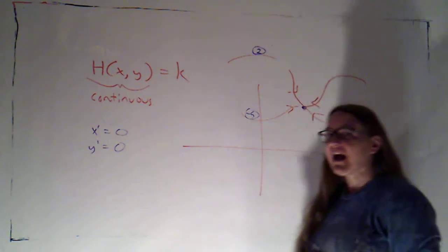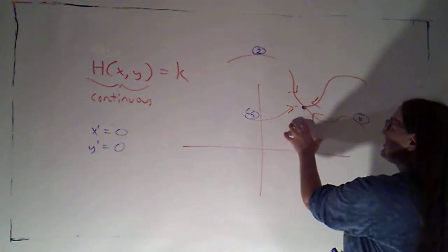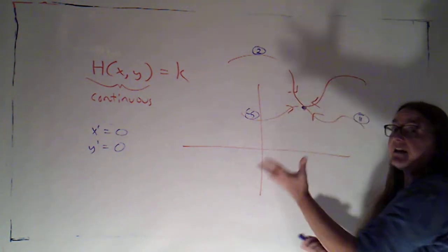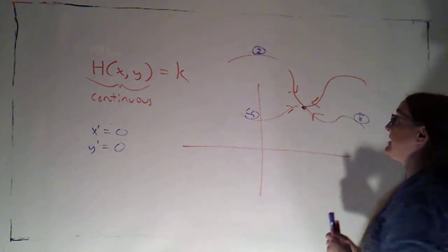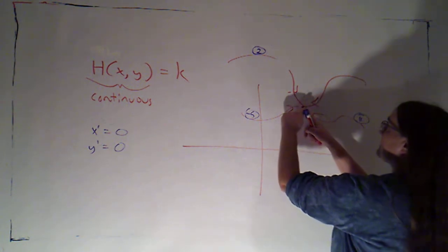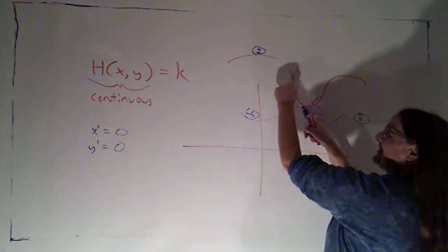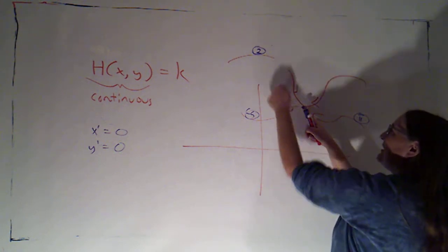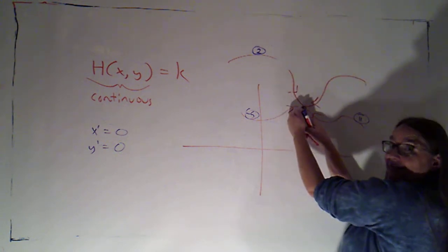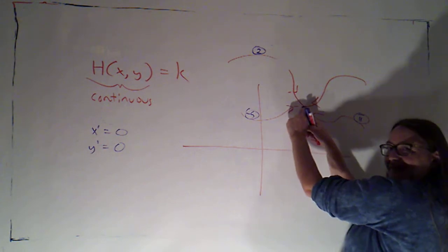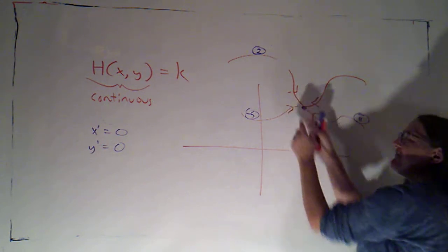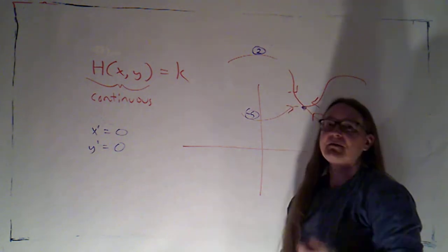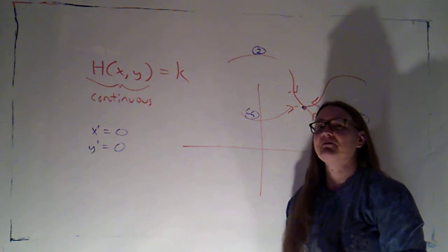So that's why if it's Hamiltonian, we can't have a sink of any type. And it's also why we can't have a source of any type. Because if this were a source, all I'd do is change the direction on these curves. But I'd still, as t approached negative infinity, be getting arbitrarily close to this point. And so my function would still not be able to be continuous at that equilibrium point.